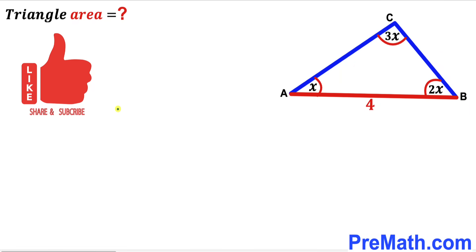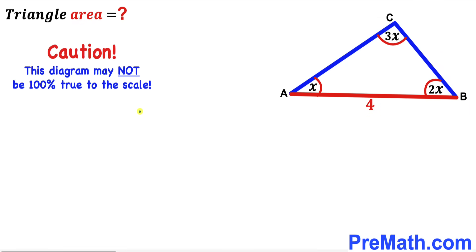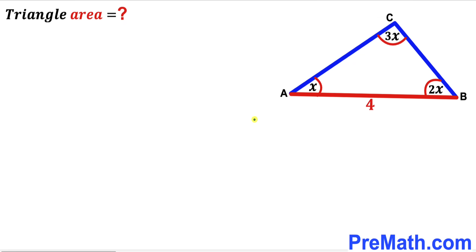Please don't forget to give a thumbs up and subscribe, and please keep in mind that this figure may not be 100% true to the scale. Let's get started and focus once again on triangle ABC. We can see our three interior angles are x, 2x, and 3x.